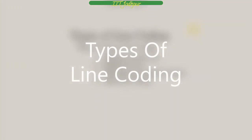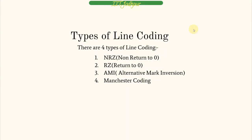There are four major types of line coding: first, NRZ (non-return to zero); second, RZ (return to zero); third, AMI (alternate mark inversion); and fourth, Manchester code. Let us now look at all of these types one by one.